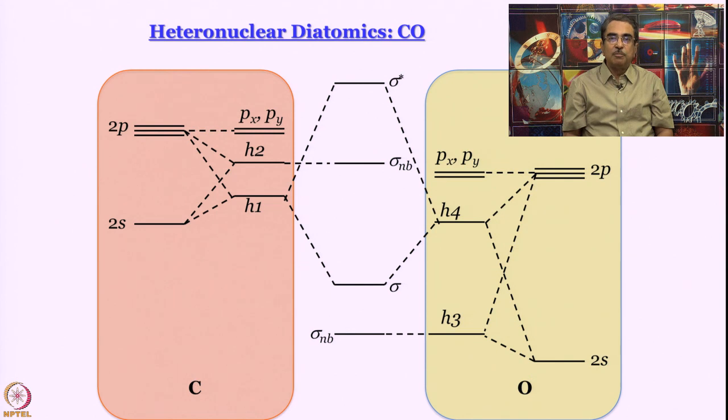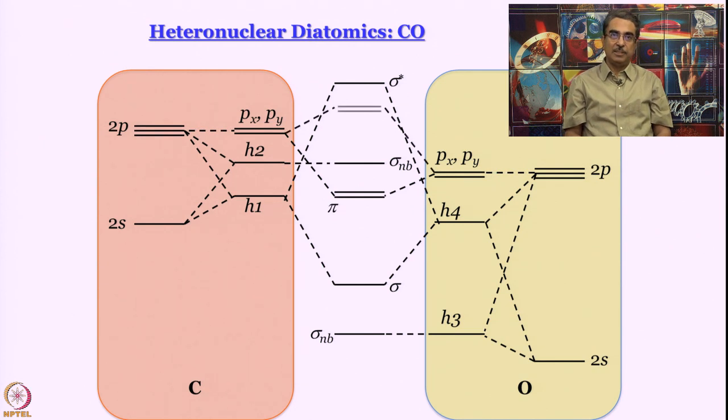What about your px and py? They are going to give you the pi and pi star molecular orbitals. So, this is believed to be the energy diagram for carbon monoxide. Now, let us fill in the electrons. Four electrons from carbon, remember we are neglecting the n equal to 1 shell altogether, we are only talking about the valence shell. So, four electrons there and six electrons for oxygen.